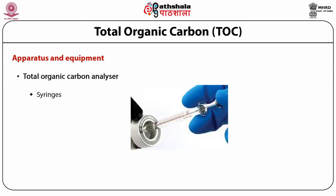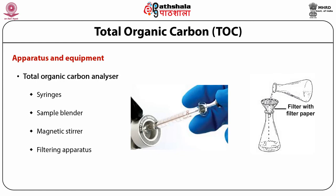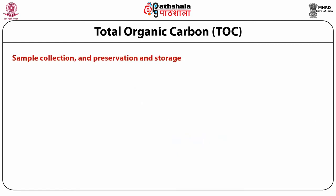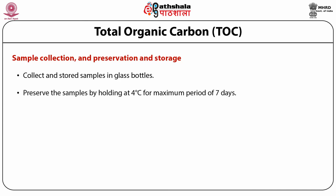The apparatus and equipment required for TOC analysis include a total organic carbon analyzer, syringes of different microliter sizes, a sample blender or homogenizer, magnetic stirrer, TFE-coated stirring bars, and filtering apparatus with 0.45 micrometer pore diameter filter. For sample collection, preservation, and storage, collect the sample in a properly cleaned glass bottle rinsed with organic-free water, protected from sunlight, and sealed with Teflon or back septa. Preserve by holding at 4°C for a maximum of 7 days.